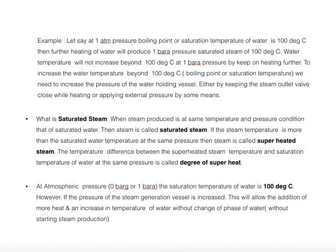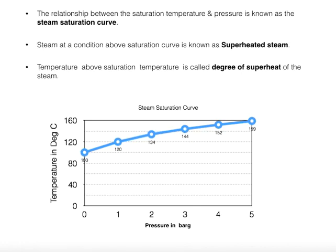At atmospheric pressure — zero bar gauge or one bar absolute — the saturation temperature of water is 100 degrees centigrade. However, if the pressure of the steam generation vessel is increased, this allows the addition of more heat and an increase in the temperature of water without a change of phase, meaning without starting steam production. The relationship between saturation temperature and pressure is known as the steam saturation curve. Steam at a condition above the saturation curve is known as superheated steam, and the difference from the saturation temperature is called the degree of superheat.